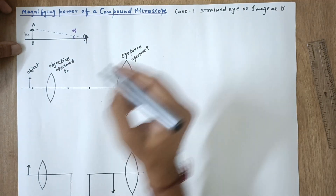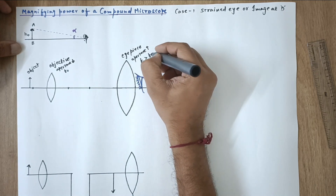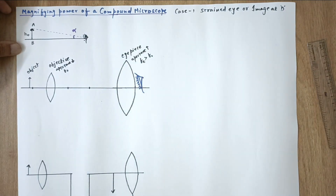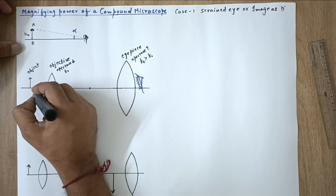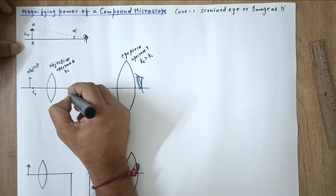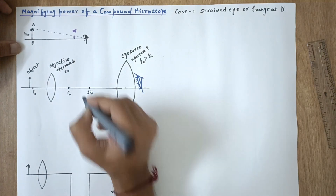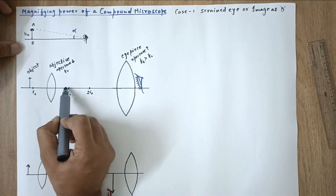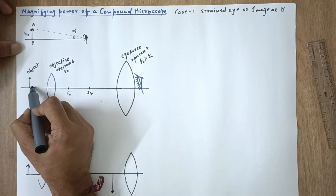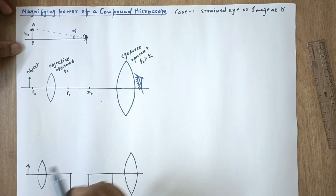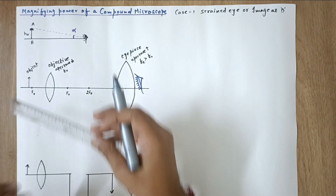The focal length of the objective, fo, should be less than the focal length of the eyepiece, so fe is larger than fo. The focus of the objective is marked, and twice the focus is at 2f. This object is placed slightly behind the focus of the objective lens.